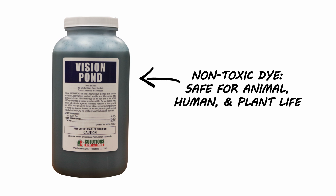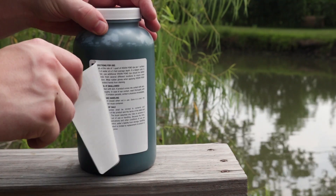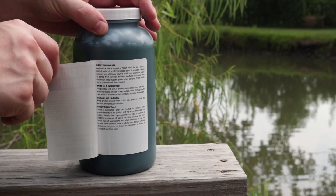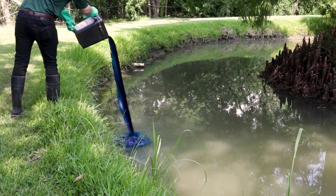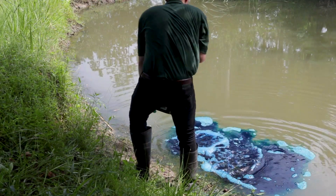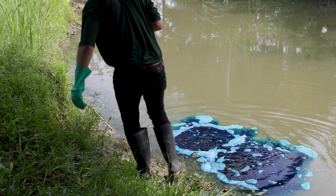You can also use a product called Vision Pond Dye. This is a non-toxic dye that is safe for animal, human, and plant life. It will give the water a natural blue color but also filters UV light to inhibit algae and weed growth. Follow the label directions for proper application rate and pour at the edge of the pond. The water's natural movement will disperse the dye.